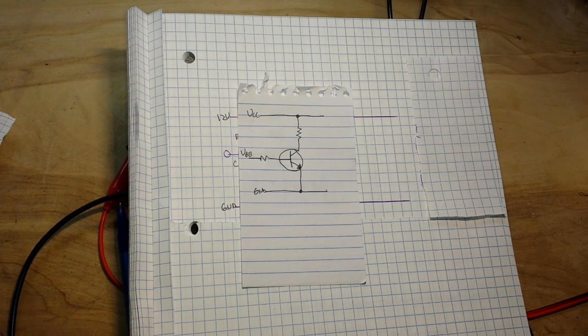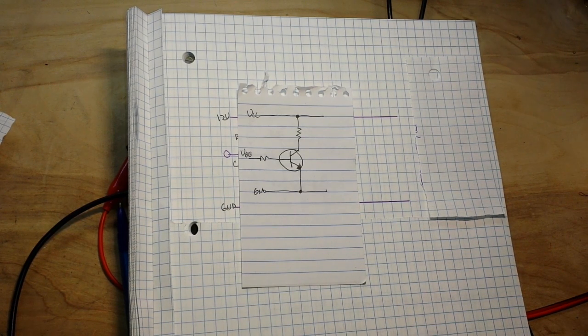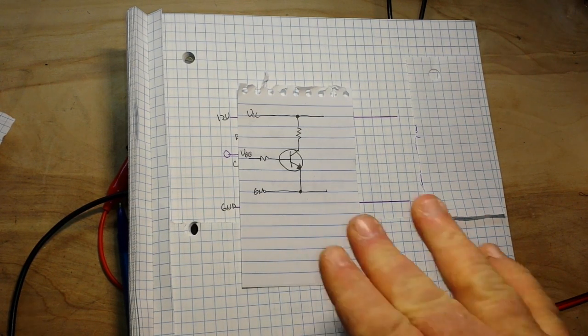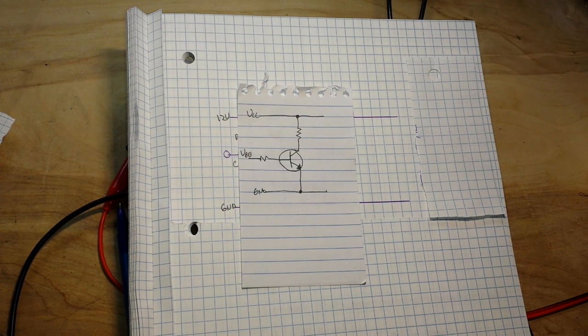Hey what's up guys, once again we're sitting here talking about amplifiers. This is going to be a simple class A amplifier and we're using a 2N2222 BJT. Now when you use a bipolar junction transistor in an amplifier, it needs to be properly biased.